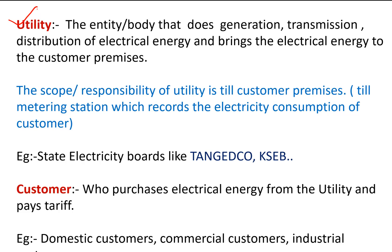The scope and responsibility of the utility extends up to the customer premises. The electrical supply wires enter your energy meter, after which electricity is distributed to all the loads in your house. So the scope of the utility is up to the energy meter of your house, building, or complex. Examples of utilities are all state electricity boards — in Kerala, the Kerala State Electricity Board — all state electricity boards which generate and transmit their own power come under the category of utilities.